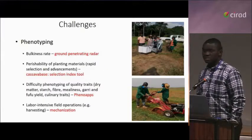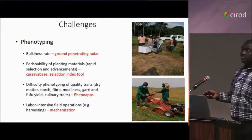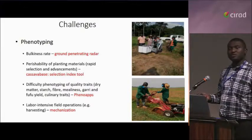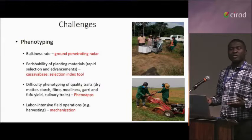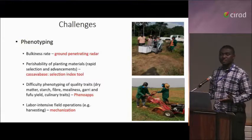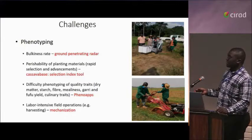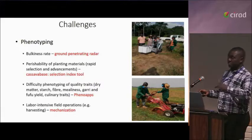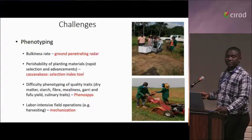So what are the challenges? We have challenges with root bulking rate. With all these challenges, how could we ease the phenotyping? One technology we have tried to adopt, which is in process, is the ground-penetrating radar (GPR). We are testing it at the moment, and a number of studies have been done at CIAT with a publication involving Hernan Ceballos.